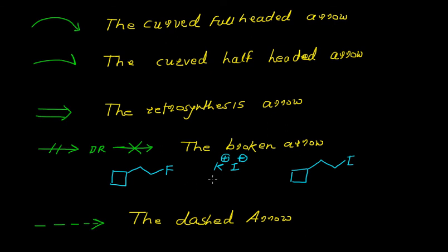So here while writing this reaction we know that the fluorine is not a good leaving group and that's why this reaction will not complete. So we must write the arrow like that. It means that this reaction is unsuccessful.